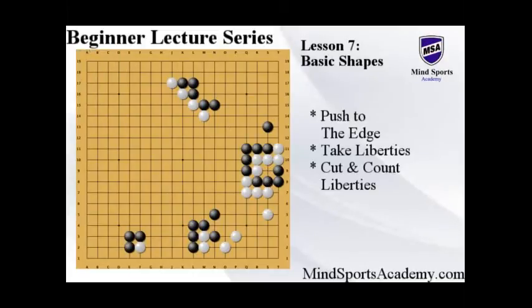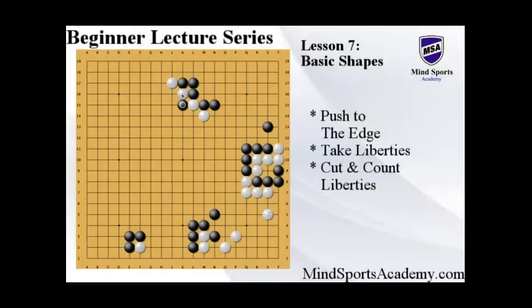Now let's look at the top side, which has to do with cutting points. A cut is when you disconnect your opponent - for example I can go here and you see this stone and this stone are both disconnected. Our concept here is actually a double atari. A double atari means when I cut, this stone only has one liberty so it's in atari, and this stone only has one liberty so it's also in atari. A double atari is a very painful shape because your opponent cannot save both - either black's going to get this stone or that stone.